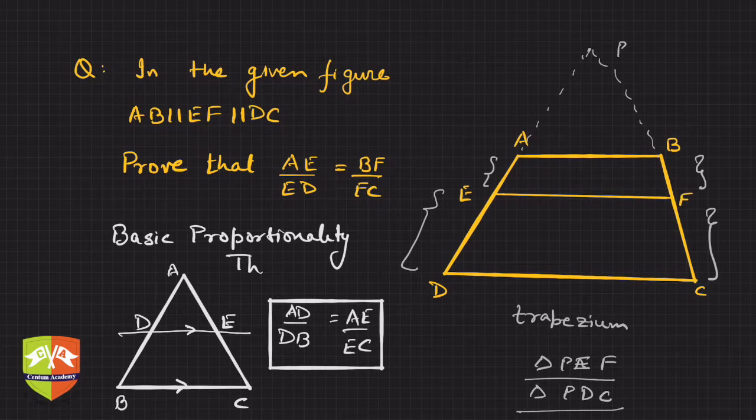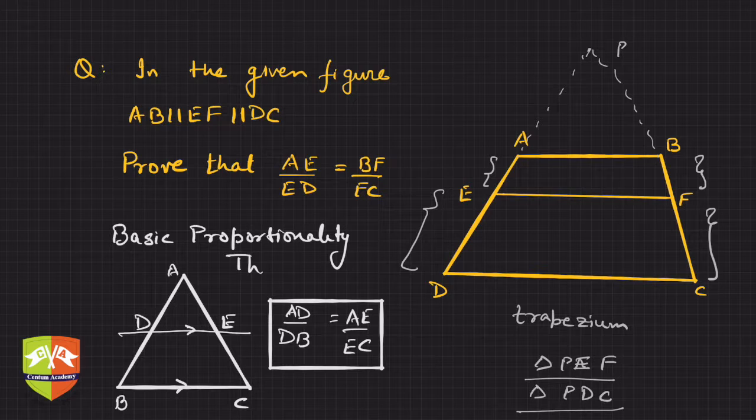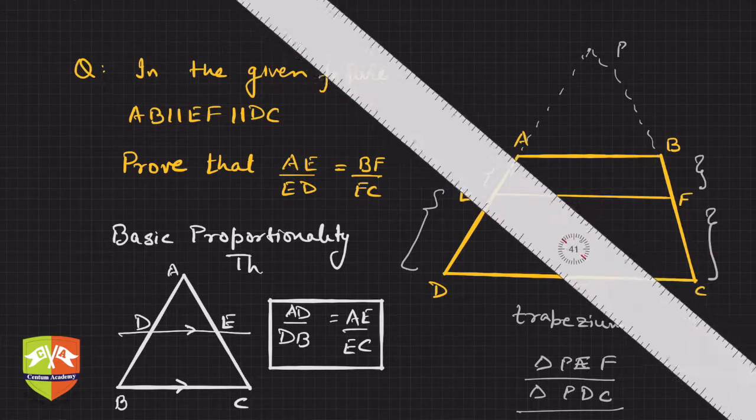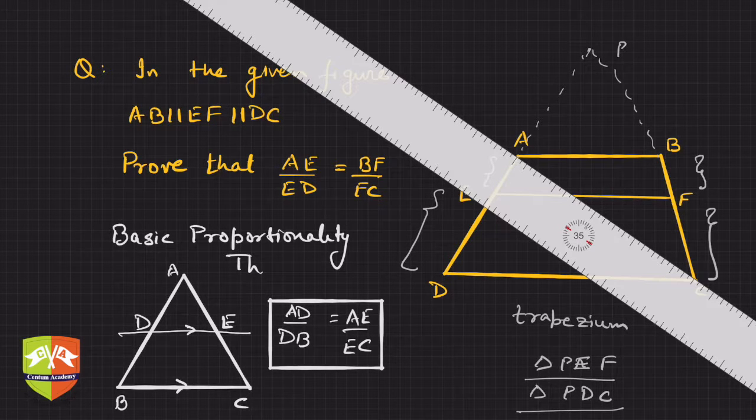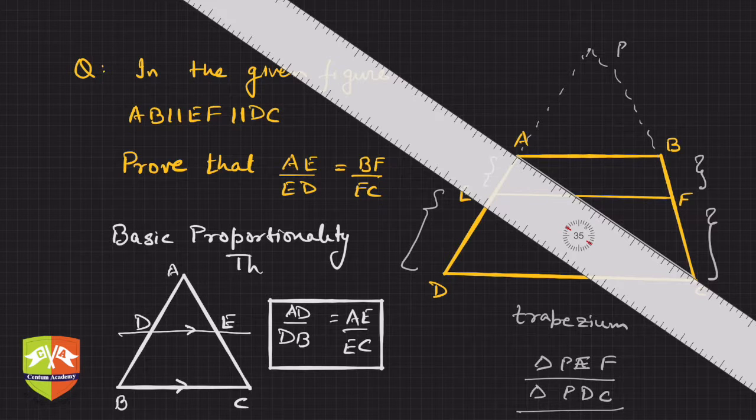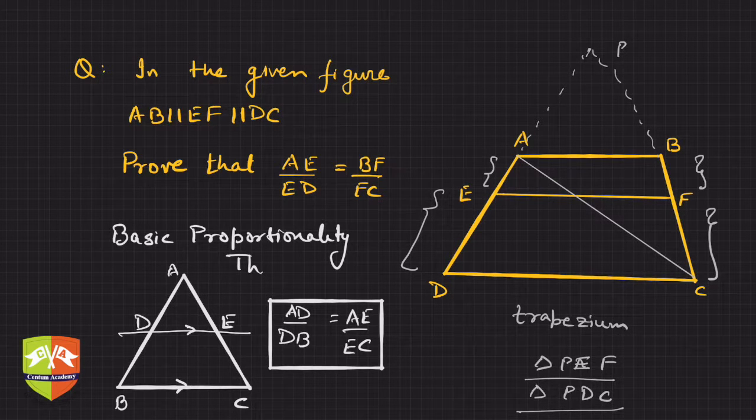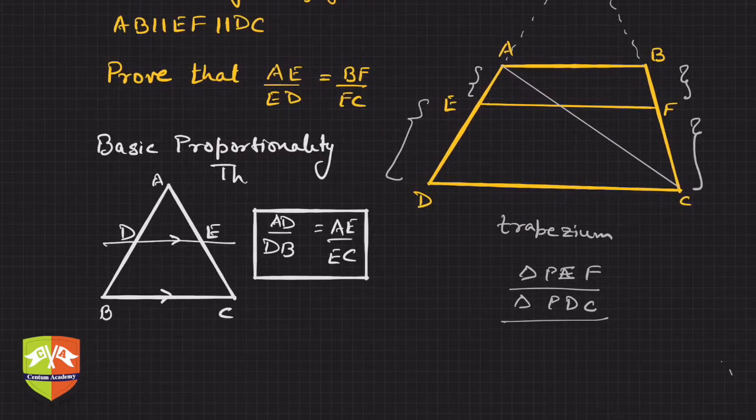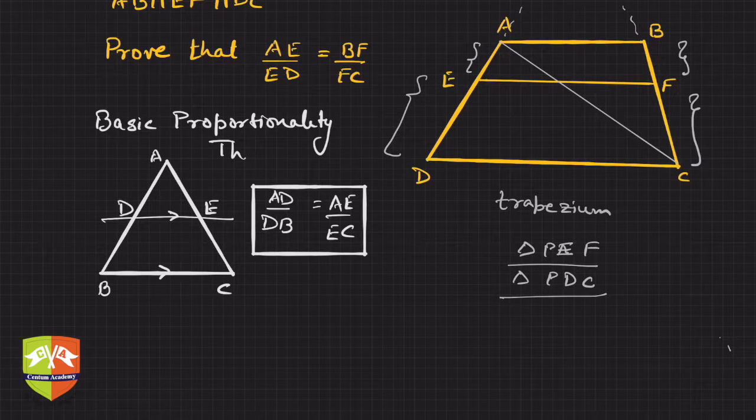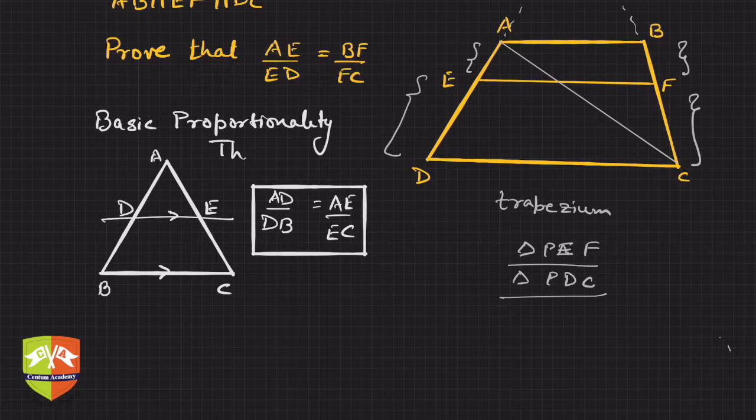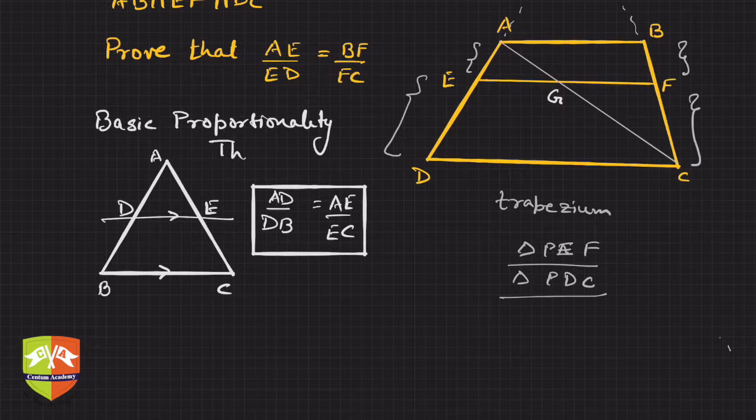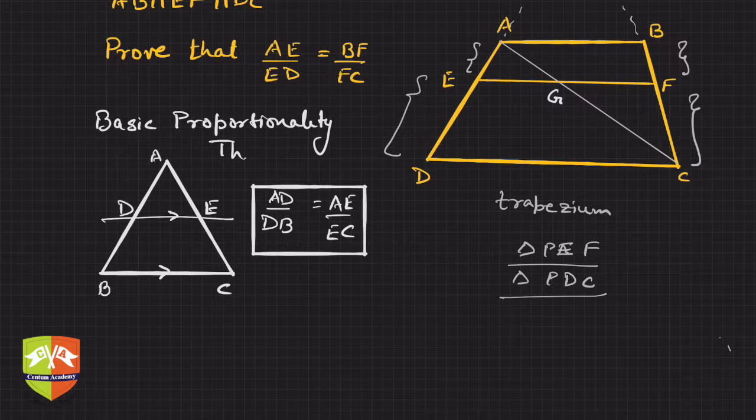So let me join them. I'm joining these two points. I'm joining AC, this is the construction I did. Now if you see there are two triangles we obtain and things will become simpler. Let this point be G, the point of intersection of EF and AC.